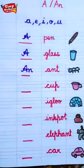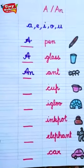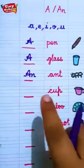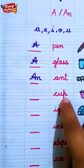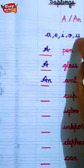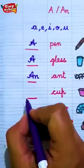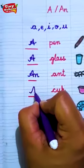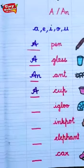Cup. C, U, P. Cup. Cup. See? C sound is here. No. So what I will write? A cup. A cup.